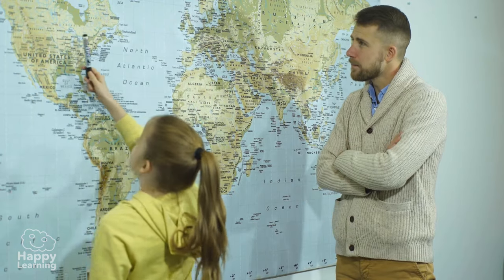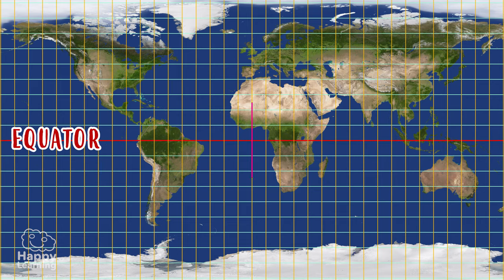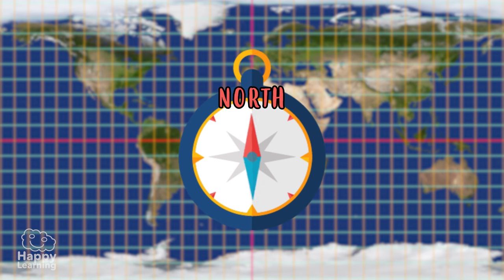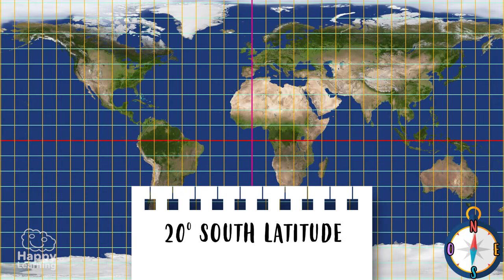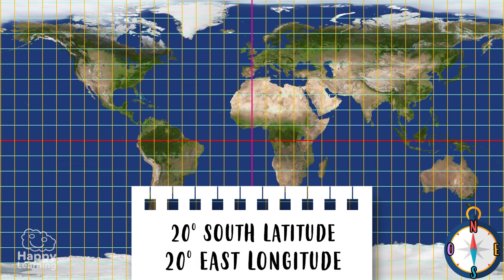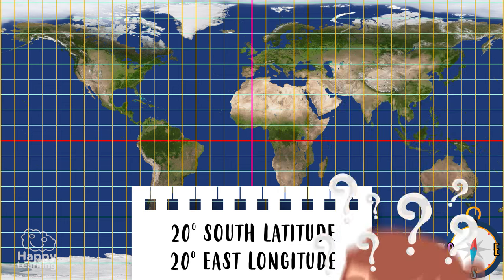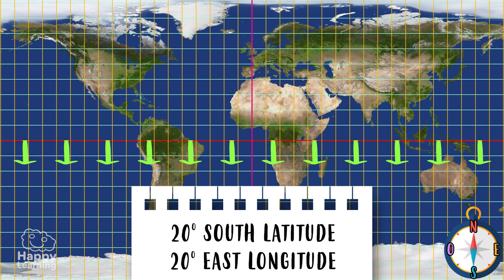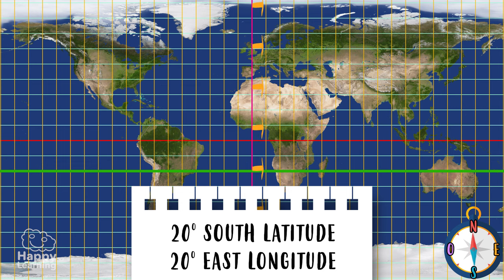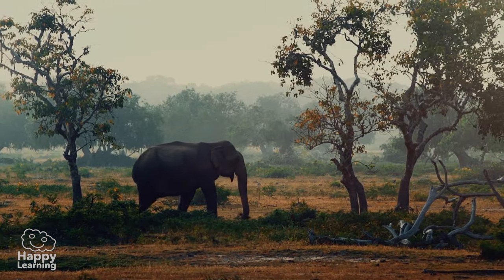Let's try it. This here is the equator, and this here is the Greenwich Meridian. So this is north, this is south, this is east, and this is west. Now, let's say we are at 20 degrees south latitude and 20 degrees east longitude. Where are we? Let's see: 10, 20 south latitude — here. 10, 20 degrees longitude — here. We are in Africa! Maybe we will see some lions. How exciting.